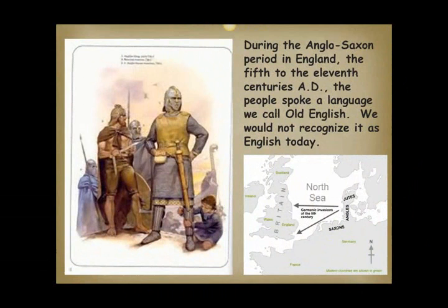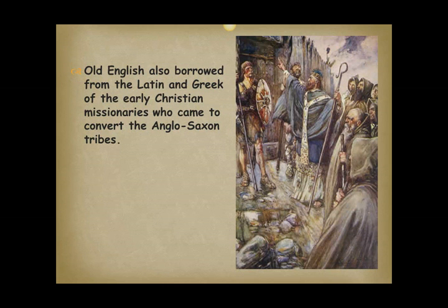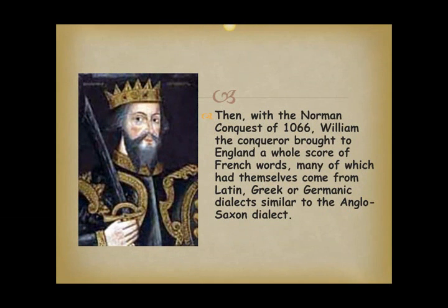During the Anglo-Saxon period in England, the 5th to the 11th centuries AD, the people spoke a language we call Old English — we would not recognize it as English today. Even during the Anglo-Saxon period, Old English borrowed words from the Danes, who occupied the northeast of England. Old English also borrowed from the Latin and Greek of the early Christian missionaries who came to convert the Anglo-Saxon tribes. Then, with the Norman conquest of 1066, William the Conqueror brought to England a whole score of French words, many of which had themselves come from Latin, Greek, or Germanic dialects similar to the Anglo-Saxon dialect.